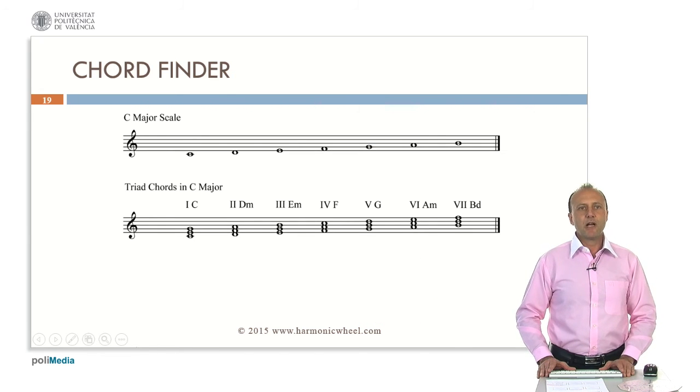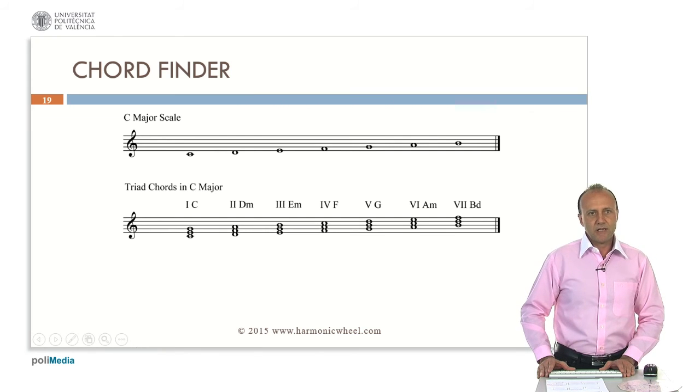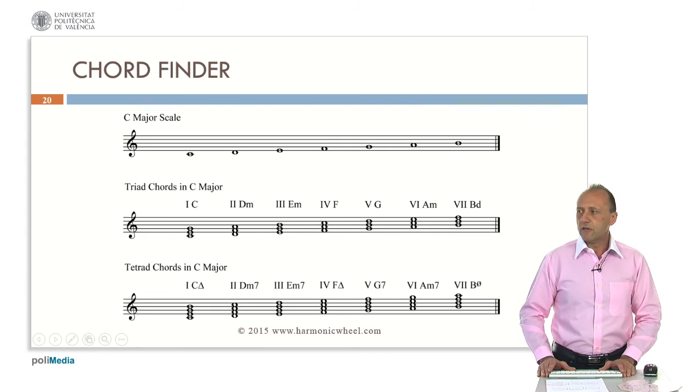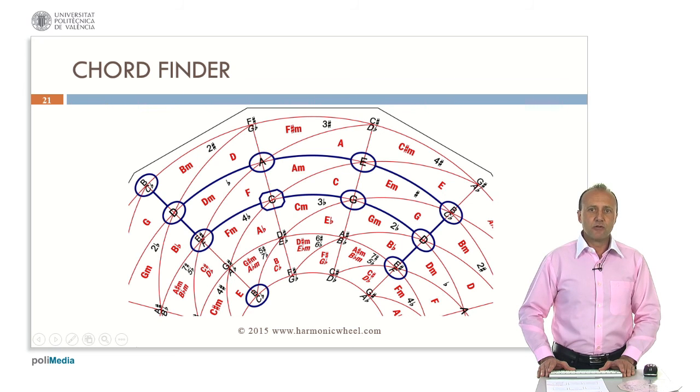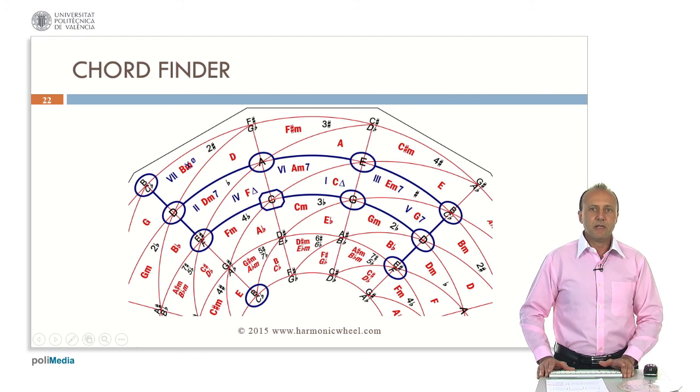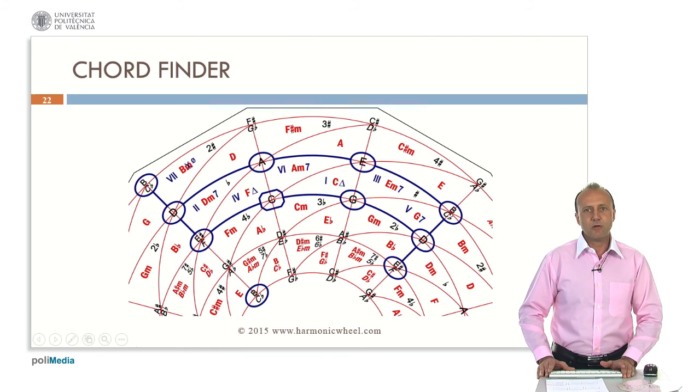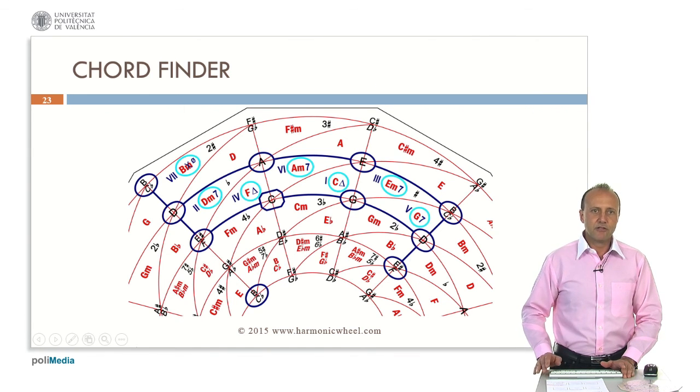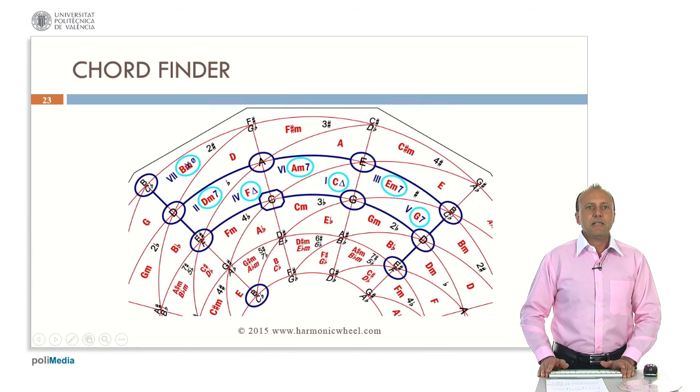If we want to harmonize a melody, for example in C major, we can use three-note chords, that is, triad chords, or we can use also four-note chords, or tetrads, which are usually known as seventh chords. On the plastic disc, I also included the seventh chords. So, I printed a Roman numeral indicating the degree of the scale, and then a symbol indicating the seventh. So, here we have the seventh chords in C major.